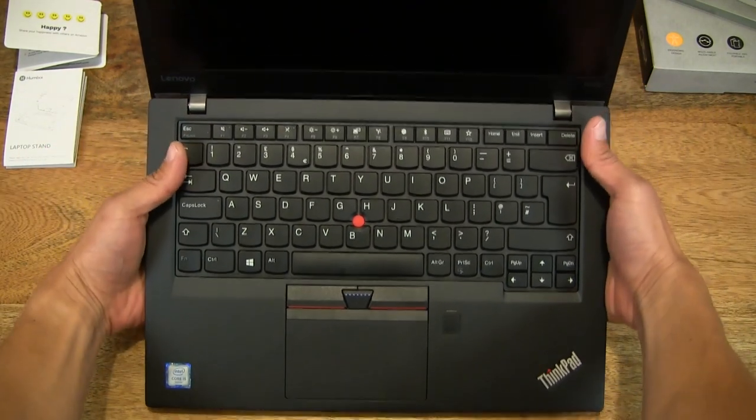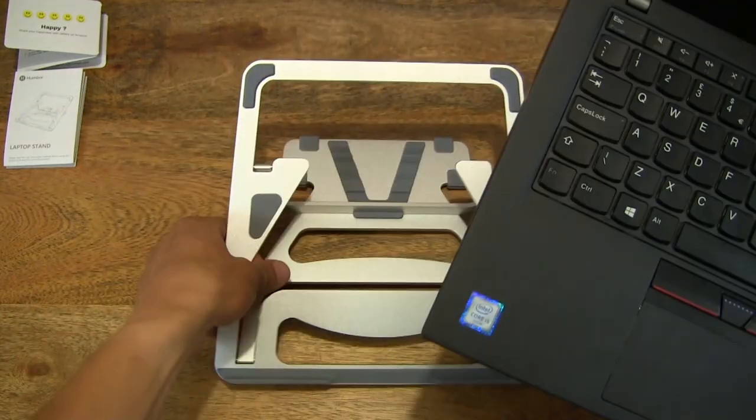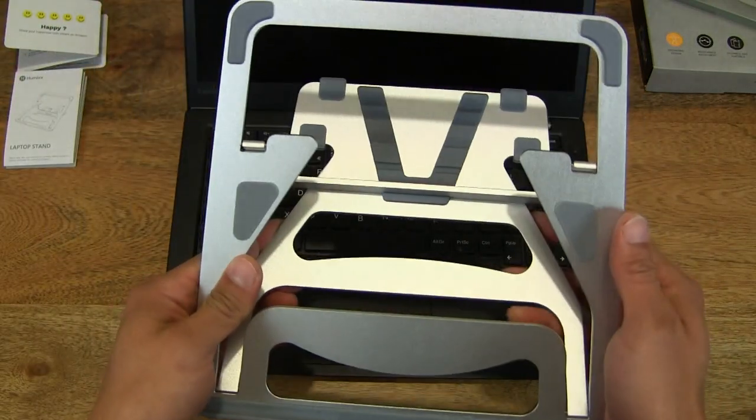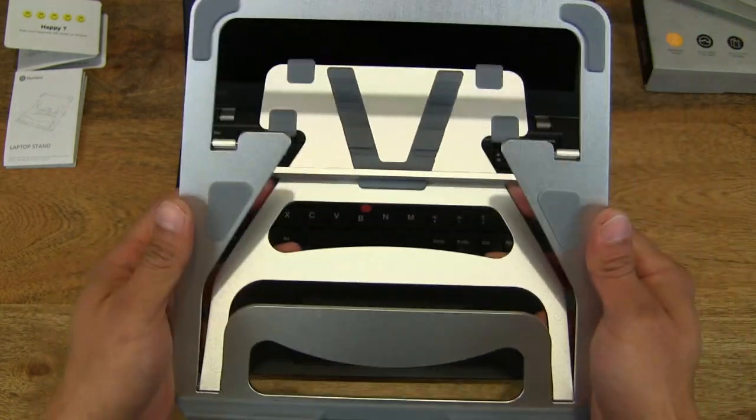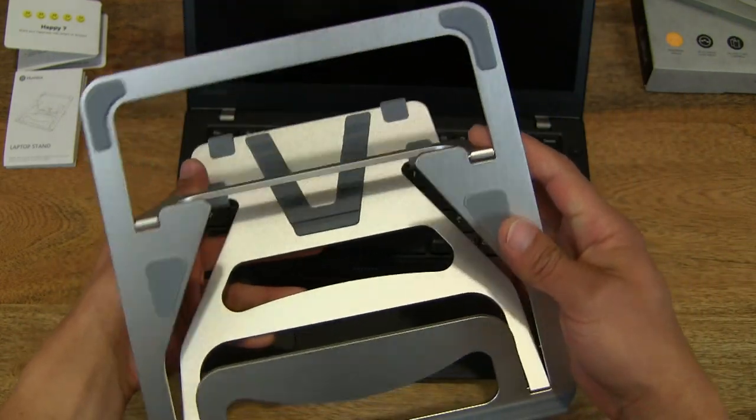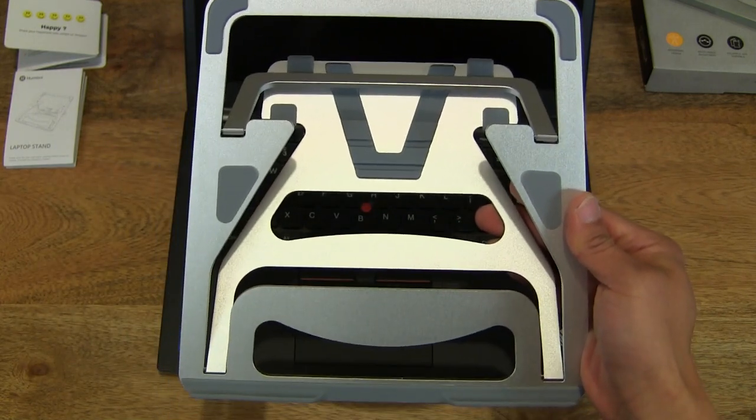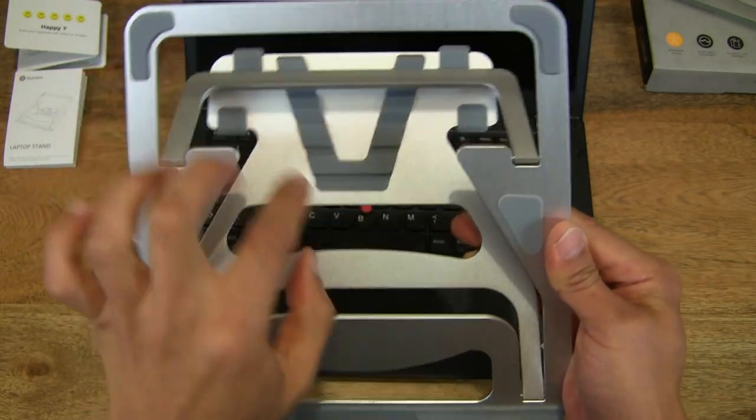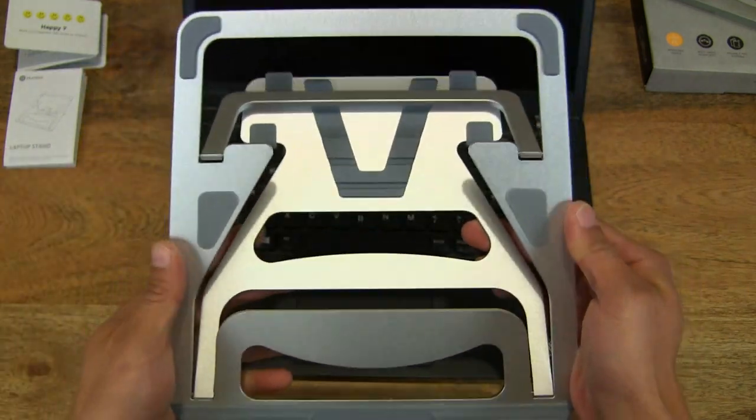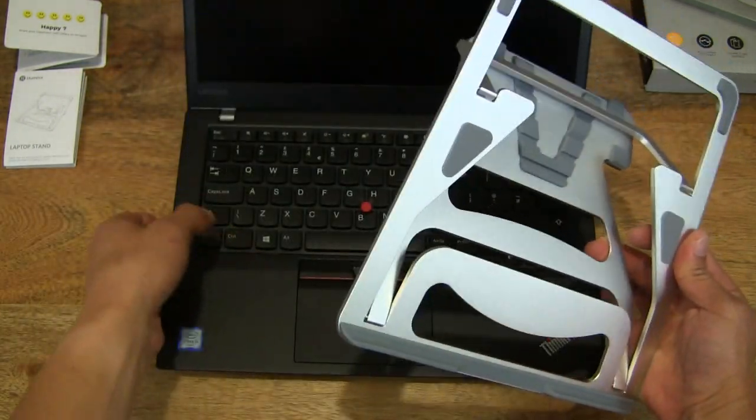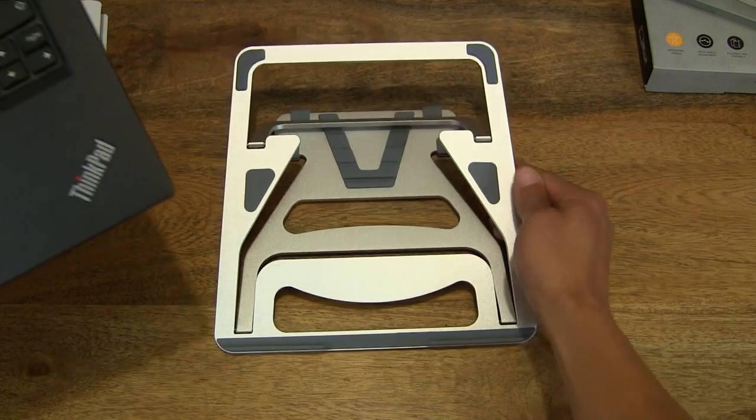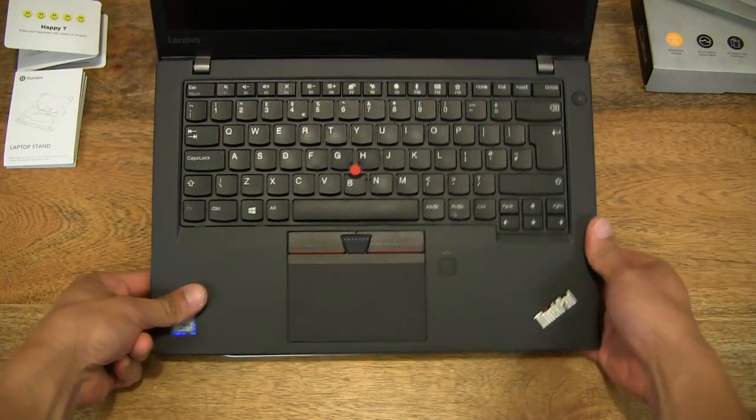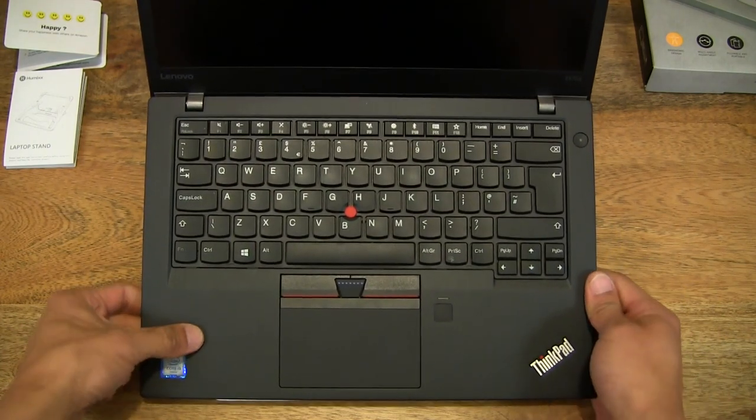We can of course set it down lower as well. So let me move the laptop off. And then of course we can set the angle to the lowest. And remember there are four levels: one, two, three, four. And I'm not so sure about the middle one even though it does kind of work. So let's set it down and now we're at the lowest tilt or angle right there.